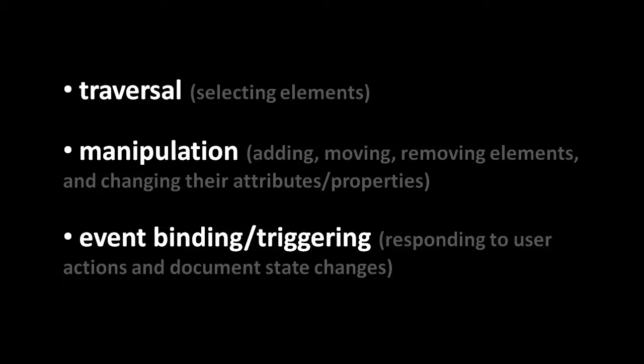Third, we have methods for binding and triggering events. Events are what allows our code to respond to user actions in the browser, such as when the user clicks on something. There are also events that occur when something changes in the state of the document itself — for example, there's an event which triggers when a document has finished loading and is ready to be inspected and manipulated by code.